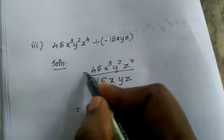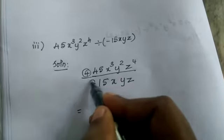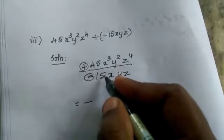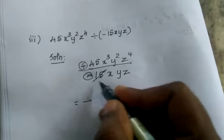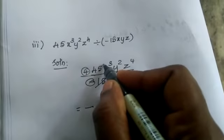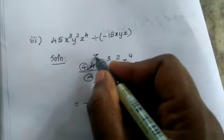Positive divided by negative means what? Negative. Now we are dividing the numbers. 45 divided by 15 is 3.